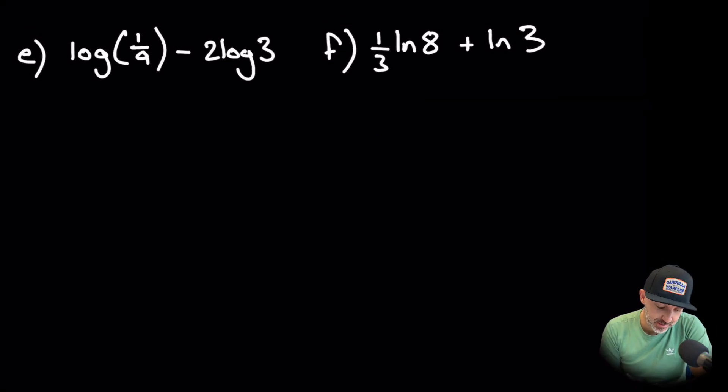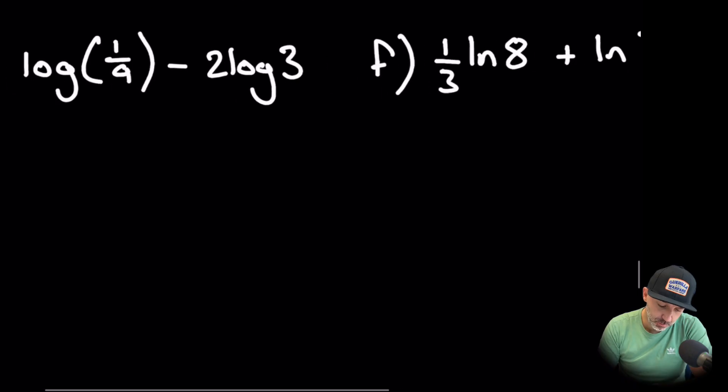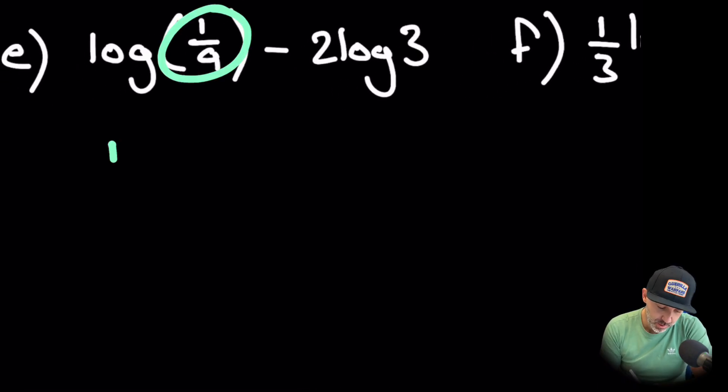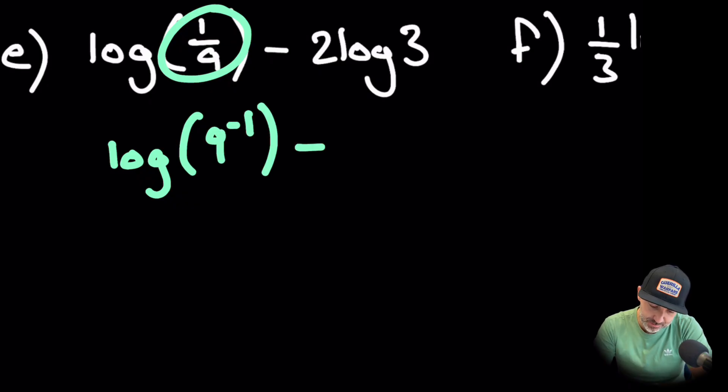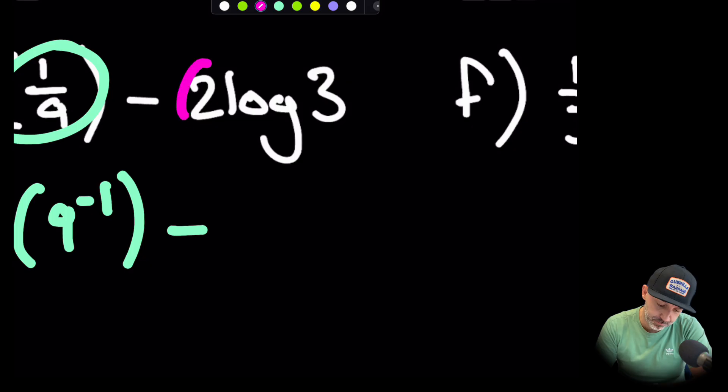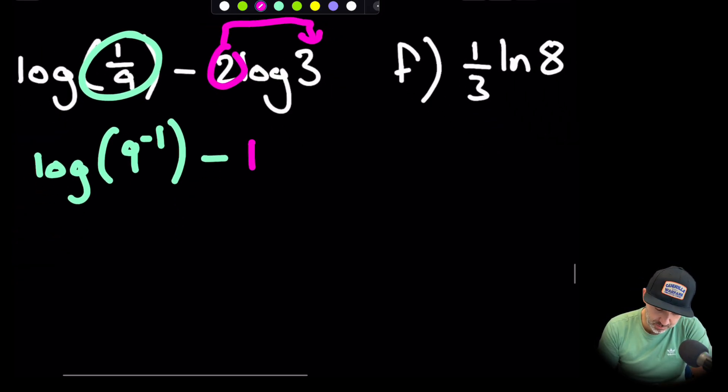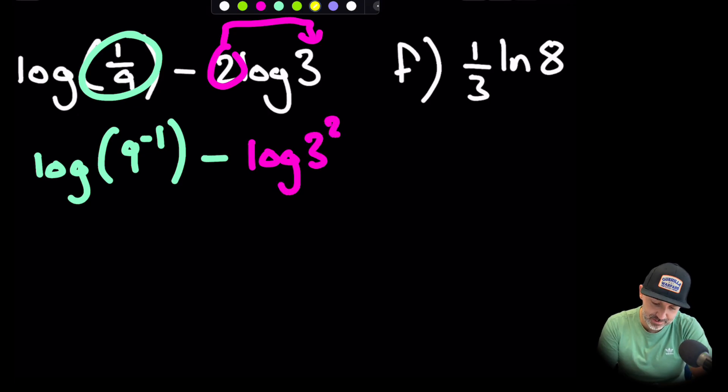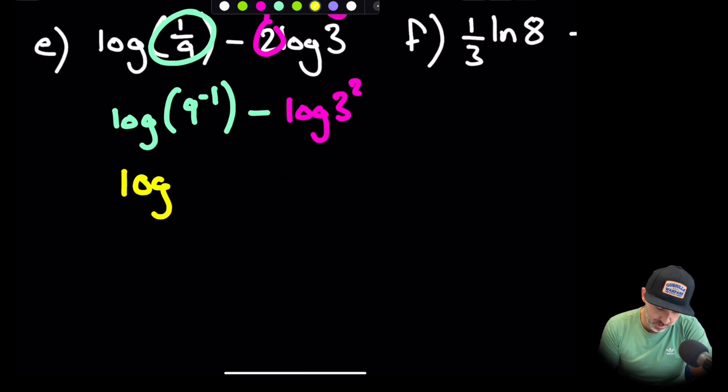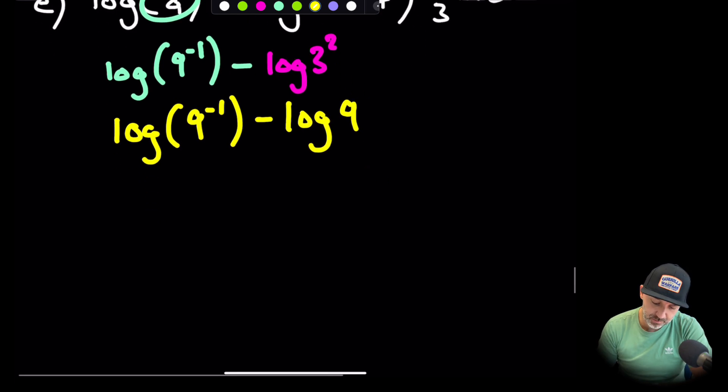Part e is a subtraction but we need to deal with this maybe first of all. We can say that log 1 over 9 is 9 to the minus 1, and then we have subtract. Let's deal with this 2. We can bring this 2 and put it back up on the power, so we can have a singular log form of 3 squared. Now 3 squared is 9, so let's go down one more line. We've got 9 to the minus 1 minus log 9.